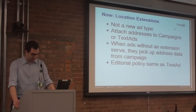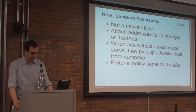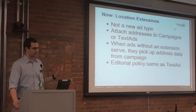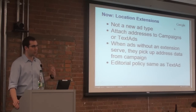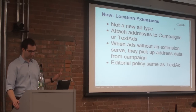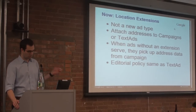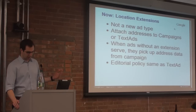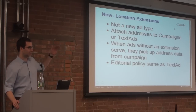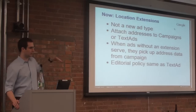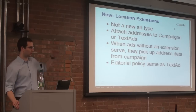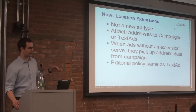Now we have local extensions. Local extensions are not an ad type. They're basically metadata that you associate with a campaign or a text ad that provides a location context when that text ad is going to show. So you attach the address at the campaign level or at the text ad level. And when an ad serves, it picks up from the campaign level by default the location that best matches what the person searched for.